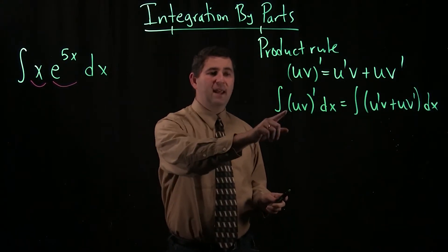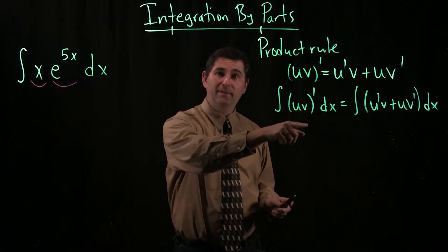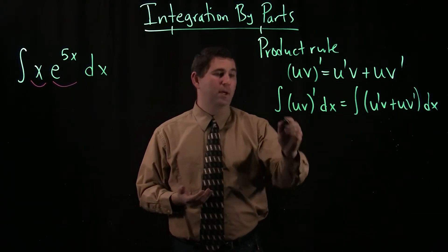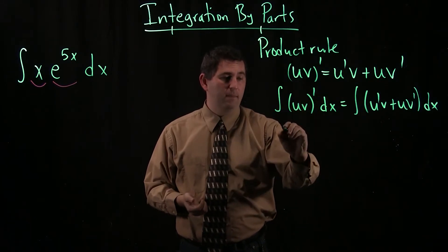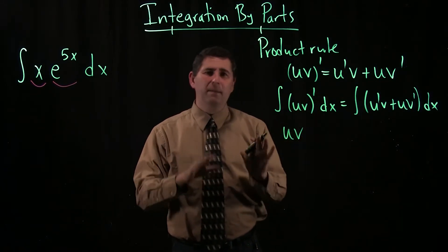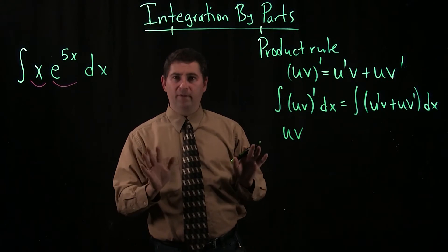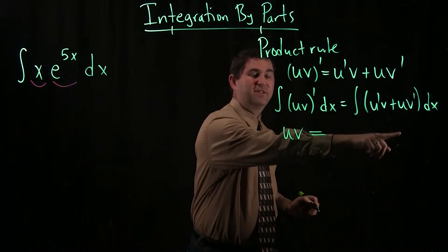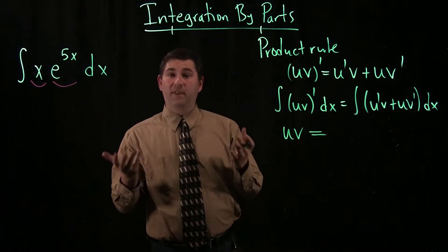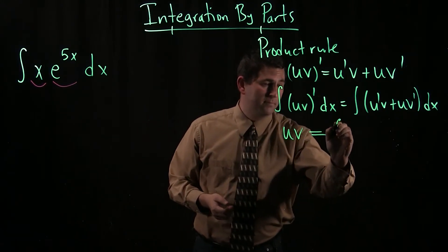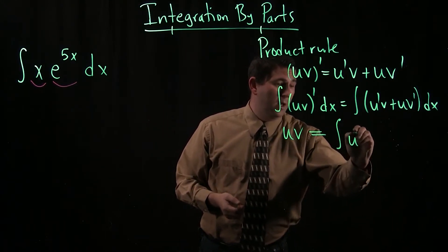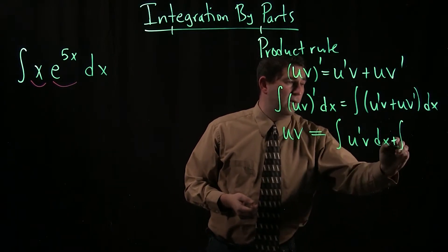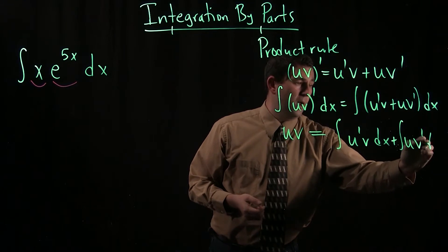Now, when I take an antiderivative of a derivative, up to a constant, I get back my original function. So, antiderivative of u v prime is just going to be u v. And I'm going to let that plus c go until the very end. On the other side, I have an antiderivative of a sum. That'll be the sum of the antiderivatives. So I get over here u prime v dx, take an antiderivative, and then an antiderivative of u v prime dx.